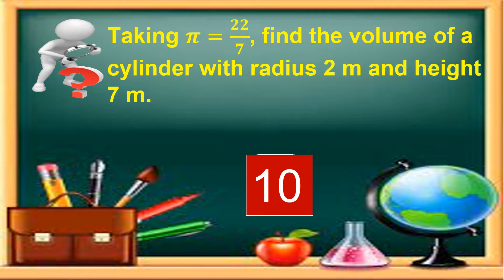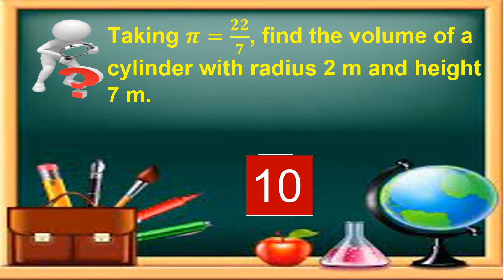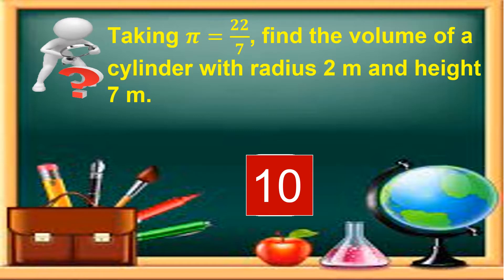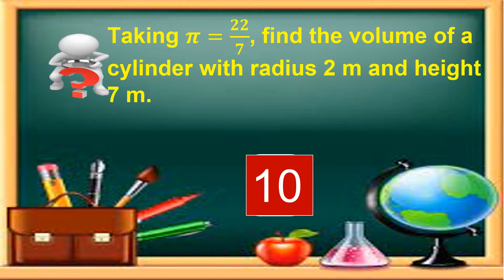To begin with, I will give you a question from our previous lesson and you will answer it in 10 seconds. Taking pi is equal to 22 over 7, find the volume of a cylinder with radius 2 meters and height 7 meters.